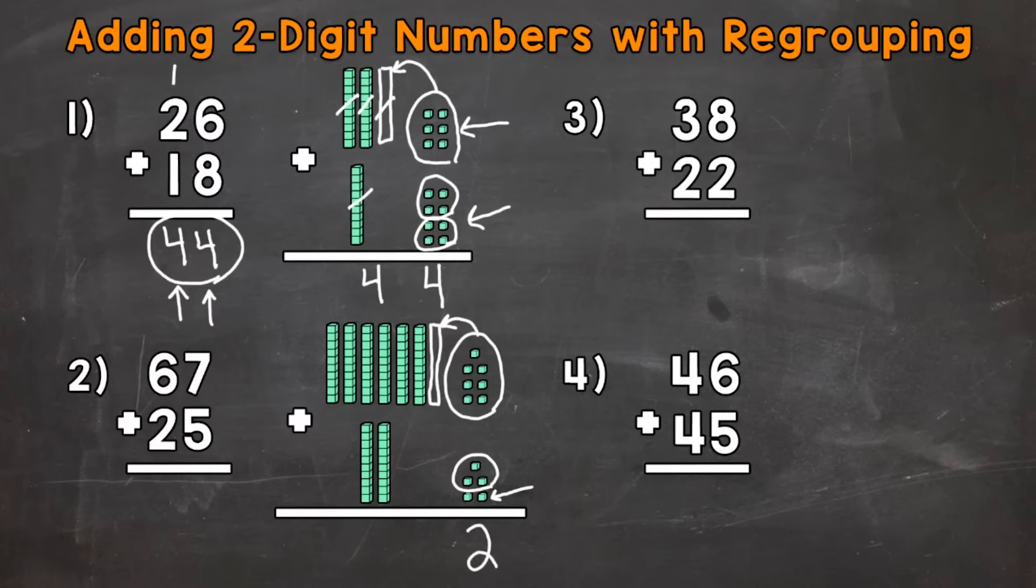Now we count how many tens we have. 1, 2, 3, 4, 5, 6, 7, 8, and 9. 9 tens. So we get an answer of 92.